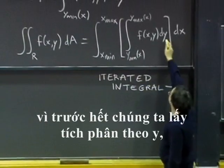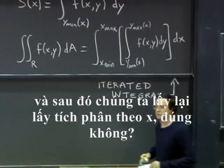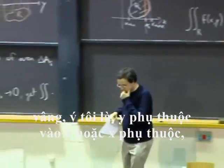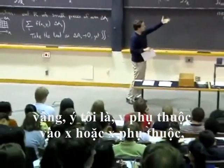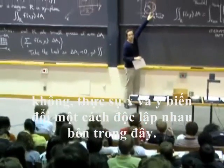Yeah, it's called an iterated integral because first we integrate over y and then we integrate again over x. So, we can do that. Well, I mean, x and y vary independently of each other inside here.